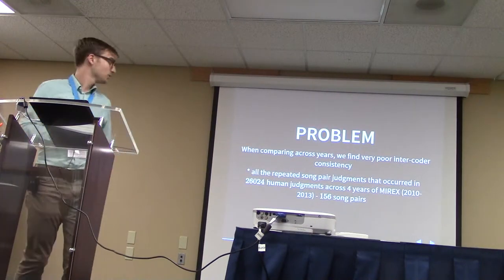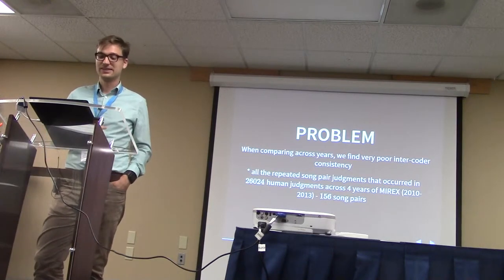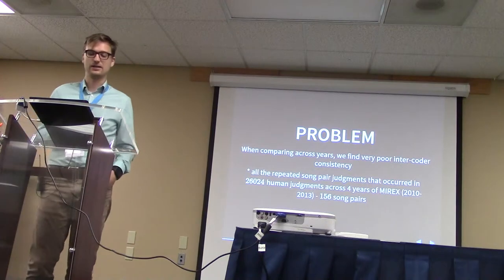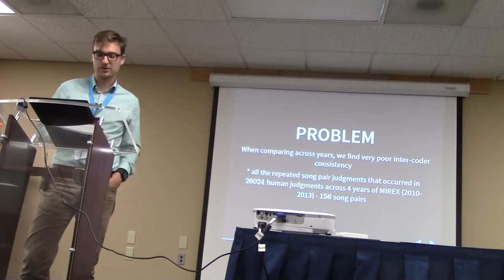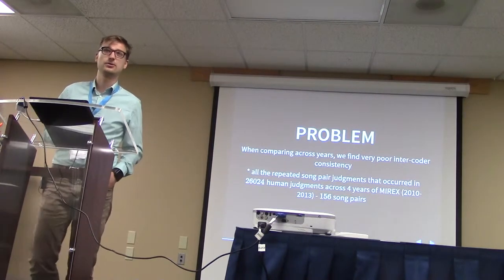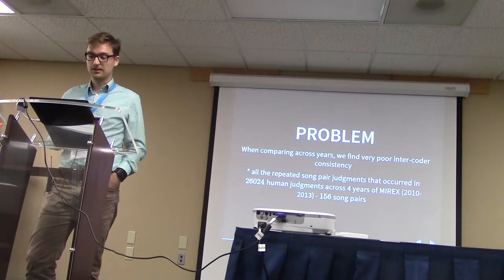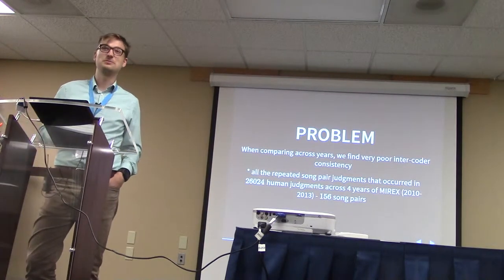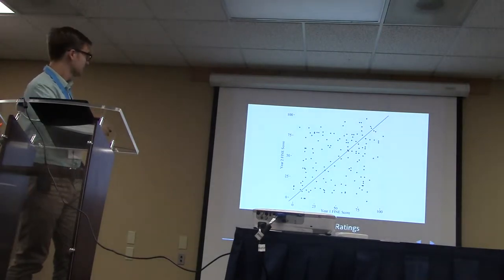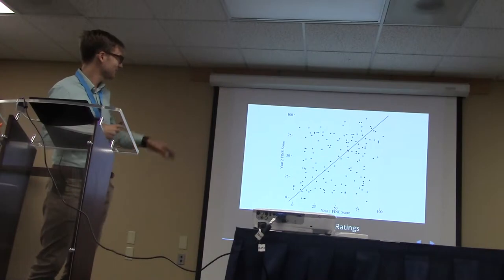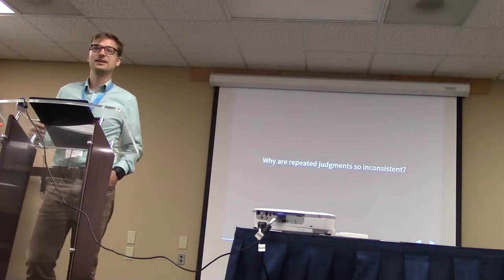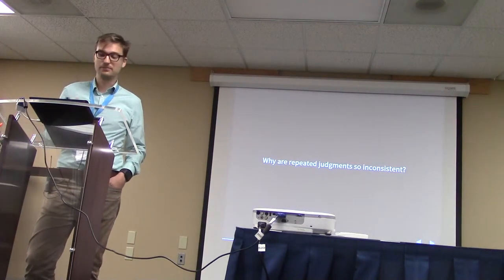Here's the problem we're talking about today. When you look at our evaluation data across the years, there's very poor intercoder consistency. For this paper, we looked at all the judgments from the last four years, which totaled 26,000, and we looked at when song pairs were judged repeatedly across different years — there were 312 instances of that. On the 100-point scale, workers demonstrated a root-mean-square error of 16.58, which is pretty poor. If everything was right with the world, all the dots on the scatter plot would be around the y equals x line — as you can see, that's not the case at all. This is a problem because it affects the trustworthiness of MIREX results, at least for this task.